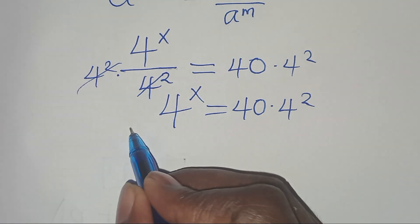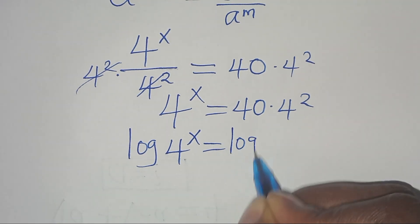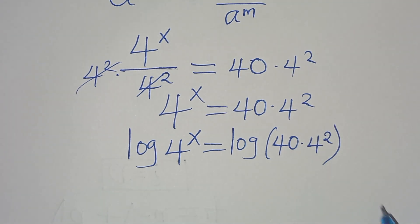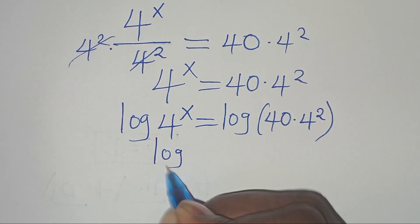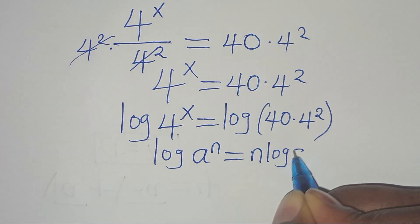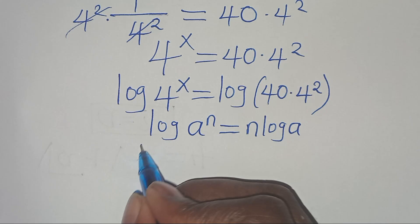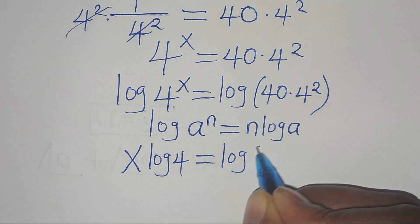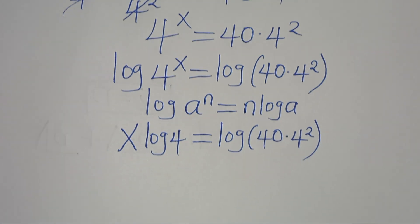To solve for x, let's introduce logarithm on both sides, so we have log(4^x) equal to log(40 multiplied by 4^2). Now log(4^x) is in the form log(a^n), which we can express as n·log(a). Applying this logarithm property, log(4^x) becomes x·log(4), equal to log(40 × 4^2).